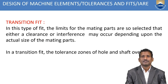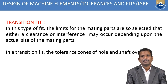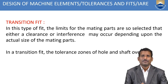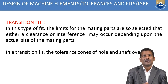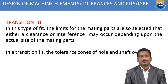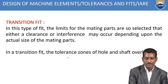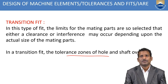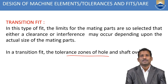The third type is transition fit. In this type, the limits for the mating parts are selected so that either clearance or interference may occur depending upon the actual size of the mating parts. In transition fit, the tolerance zones of the hole and shaft overlap, unlike interference fit where the hole tolerance zone is completely below the shaft tolerance zone.